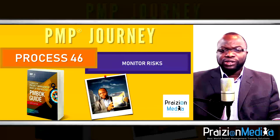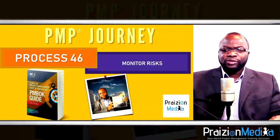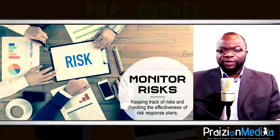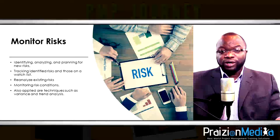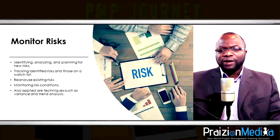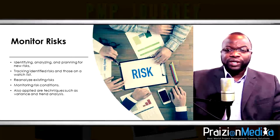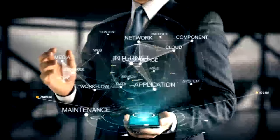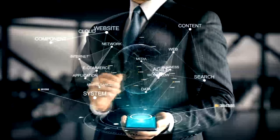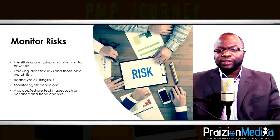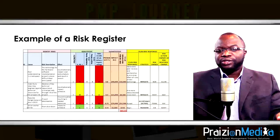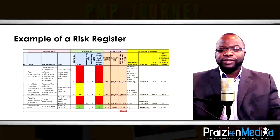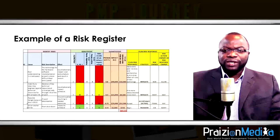Process 46: Monitor risks. The project manager and team are actively checking to make sure that risk responses were relevant and actually worked, that the reserves on the project are adequate, and that anything that could be done better risk-wise is done. Very importantly, the team should make sure that the risks in the risk register are the only risks existing on the project. If the project is exposed to new risks, those must be documented in this process.